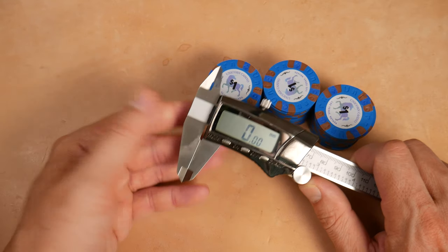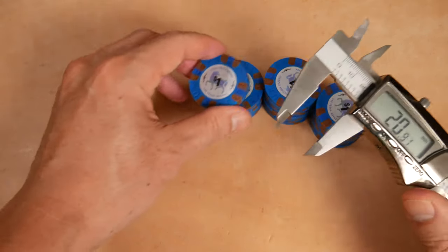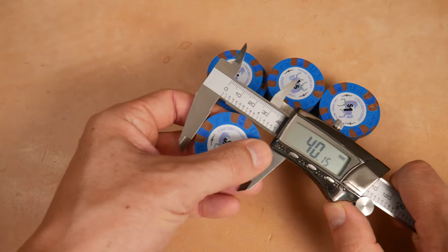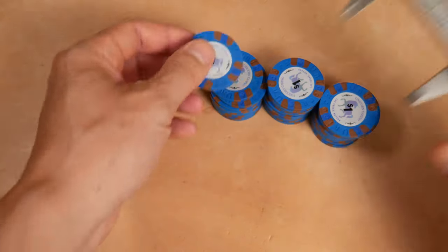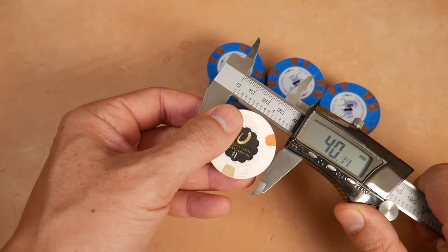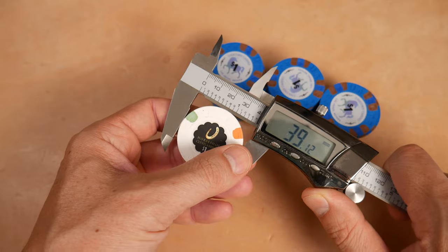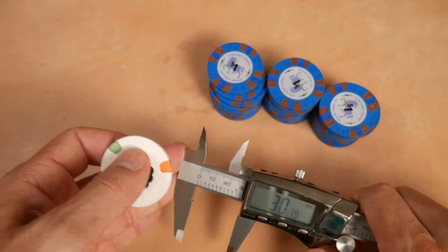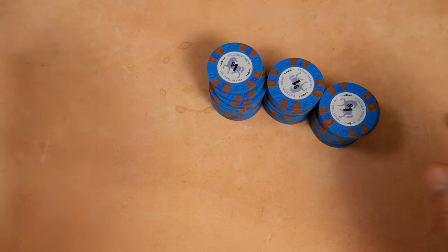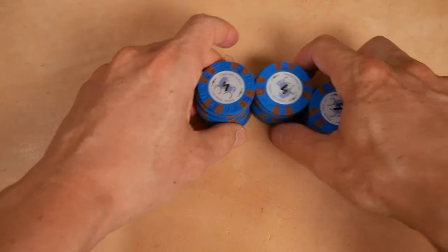We are in millimeters. Looks like it's zeroed out properly. And let's see how these measure up. So a 40 millimeter chip. Casino chips usually are referred to as 39 millimeter chips. And there we go. 39 millimeters. So in this instance that is what we've measured. So we're looking at some 40 millimeter chips.